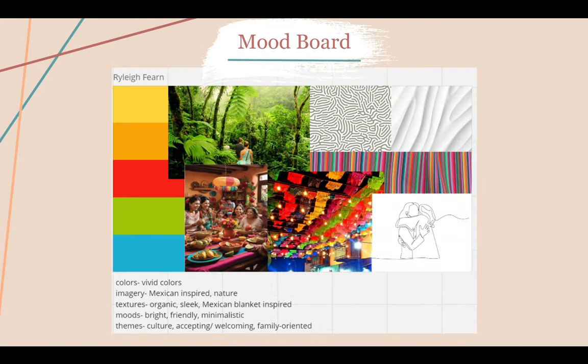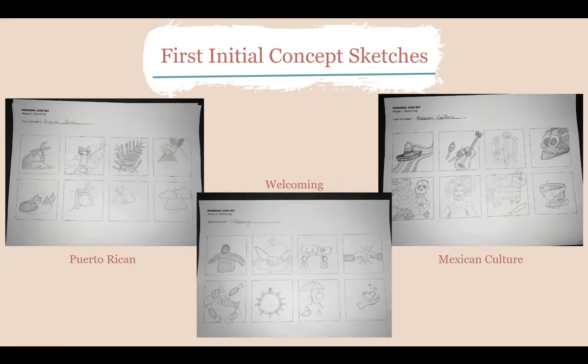I then created a mood board. The idea was to use bright, vivid colors that were Mexican-inspired. I wanted the pieces to overall feel fun, bright, friendly, and minimalistic. Then I created 24 first initial concept sketches. All of these sketches are either in the categories of Puerto Rican, welcoming, or Mexican culture.